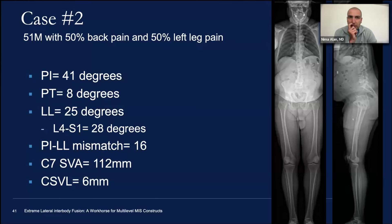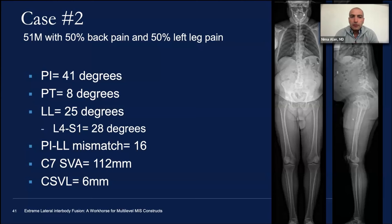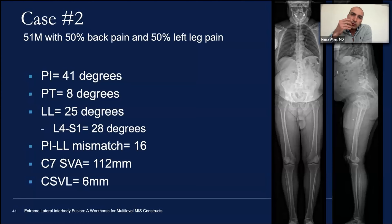Case two: this is a 50-year-old with 50% back pain and 50% leg pain. The numbers he presents with show a relatively low PI of 41 degrees with a very high SVA of 112 mm. The CSVL is about 60 mm — not really imbalanced — and relatively flat L4-S1 compared to the entire lumbar lordosis. You want most of your lumbar lordosis at the bottom.